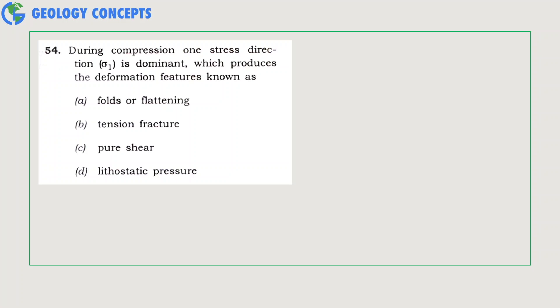During compression, one stretch direction sigma 1 is dominant, which produces the deformation features known as folds or flattening, tension fracture, pure shear, or lithostatic pressure. If the compression direction sigma 1 is horizontal, it will create folding, and if the component is vertical, it will create flattening. So option A will be the right answer.